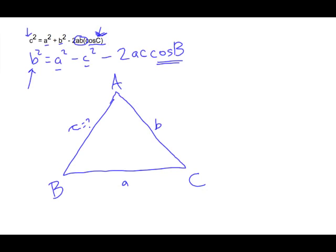Let's say we're trying to find the A value. A squared is our unknown side, which means we're given B and C, and we're subtracting by 2BC cosine A. Notice: lowercase a is what we're trying to find, but we should be given angle A. So there are three variations of the equation depending on what letter you're trying to find.